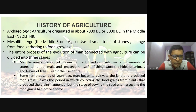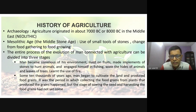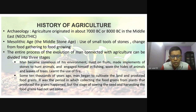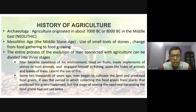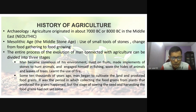During the Neolithic, the entire process of evolution of man connected with agriculture can be divided into three stages. The first stage is where man becomes conscious of his environment — he lives on fruits, makes implements out of stones to hunt animals, engages in fishing, evolves clothing from hides of animals and leaves, and learns the use of fire.